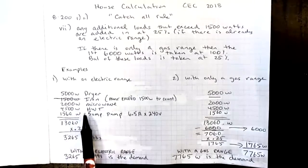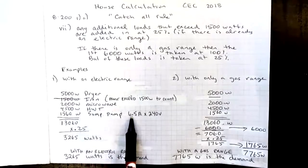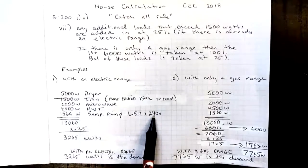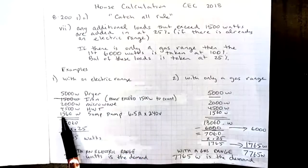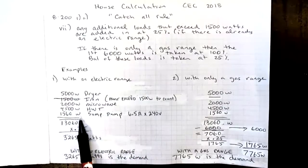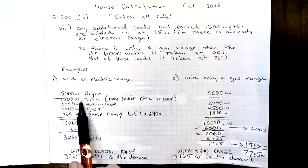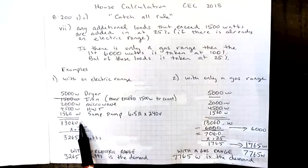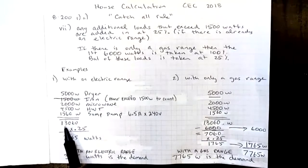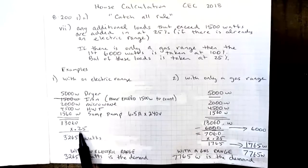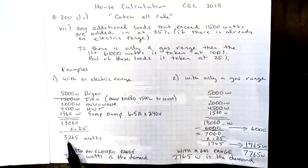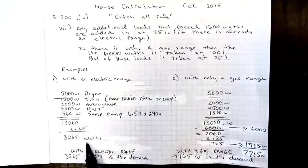Microwave, hot water tank, and then the sump pump, it's a 6.5 amp 240 volt sump pump, and that will add up to 1560 watts. So we will include that. Add up all of those items, it gives us 13,060, and we multiply that by 25% or 0.25, so the total demand that would go towards the service will be 3,265 watts.